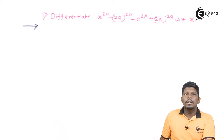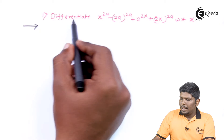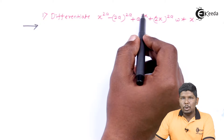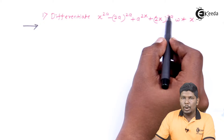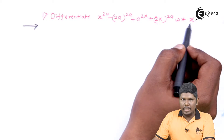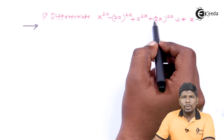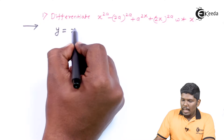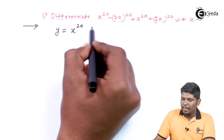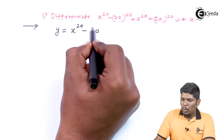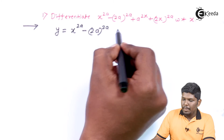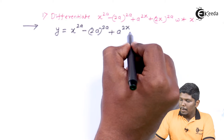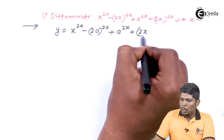In the first numerical, we have to differentiate x raised to 2a, minus 2a raised to 2a, plus a raised to 2x, plus 2x raised to 2a, with respect to x. Let us write down this sum. y is equal to x raised to 2a minus 2a raised to 2a plus a raised to 2x plus 2x raised to 2a.